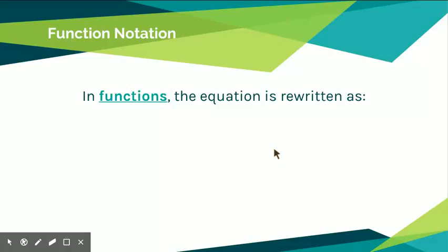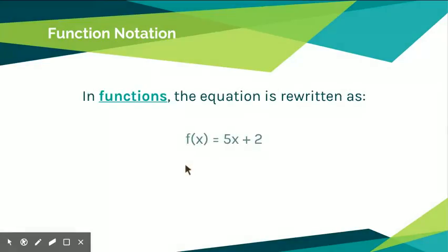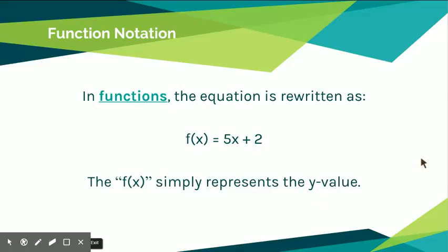In functions, the equation is usually written as f of x equals 5x plus 2 — though the numbers and variables may differ. You might also see g of x or h of x. If you compare this to slope-intercept form, it looks very similar, except there was a y in place of the f of x. Really, f of x is just y — it's just a different way of writing a y value. So f of x equals y.